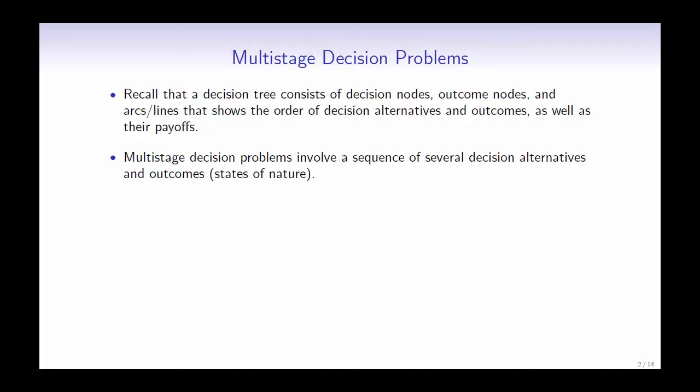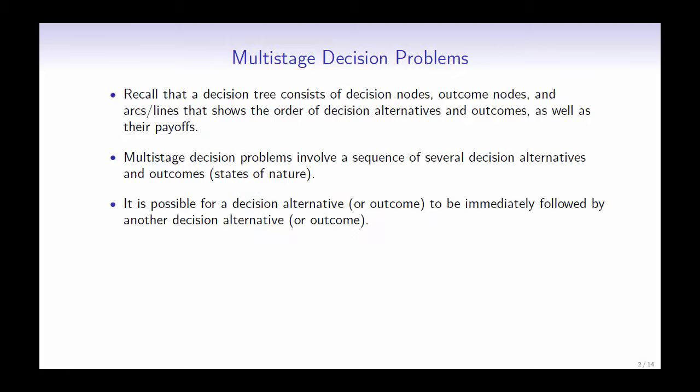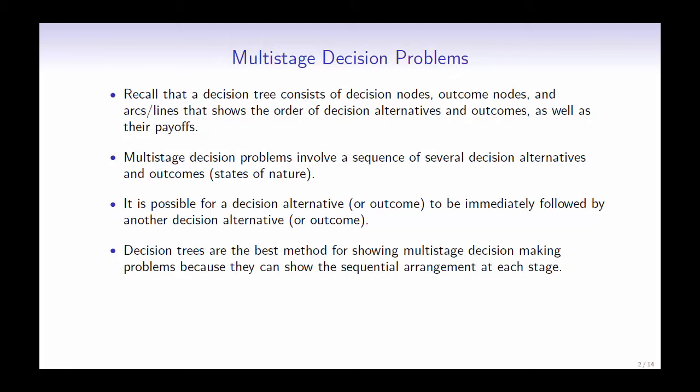Multi-stage decision problems involve a sequence of several decision alternatives and outcomes. It is possible for a decision alternative to be immediately followed by another decision alternative. Likewise, it is also possible for an outcome to be immediately followed by another outcome. Decision trees are the best method for showing multi-stage decision-making problems because they can show the sequential arrangement at each stage.